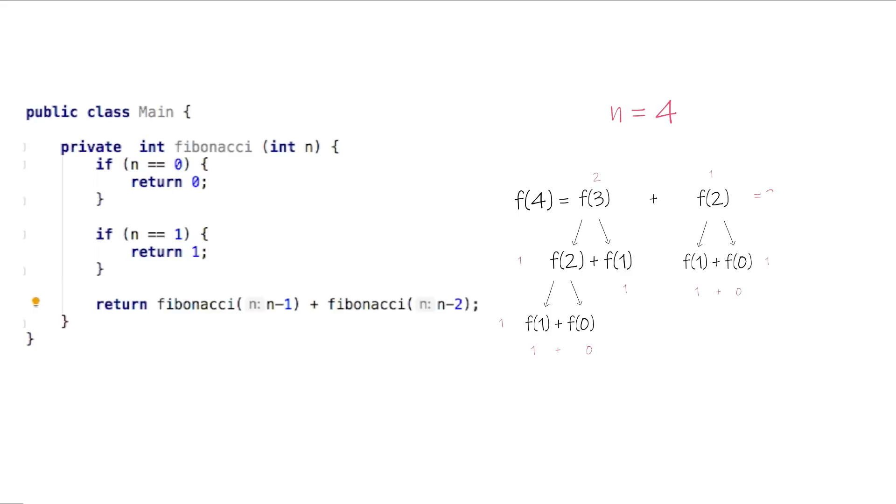So the Fibonacci of 4 equals 3. As you might have noticed in this implementation, we have some redundancies. Sometimes we do the same work multiple times. For example, we have calculated the Fibonacci of 2 two times.